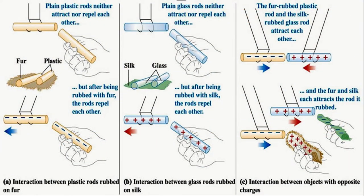There are numerous interactions between plastic and glass rods with fur and silk cloth. Plain plastic rods rubbed on fur neither attract nor repel each other before rubbing, but after rubbing they repel each other because like charges repel. Similarly, plain glass rods rubbed on silk repel each other after rubbing. The fur-rubbed plastic rod and the silk-rubbed glass rod attract each other — objects with opposite charges attract. The fur and silk each attract the rod they rubbed.